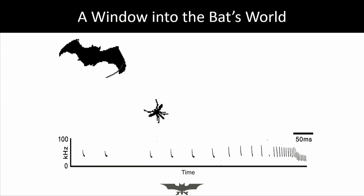Bats emit sound, echoes are received, and the brain processes these echoes to extract many types of information. When we look at a sequence of calls on a spectrogram — frequency over time — I can say quite a bit about the behavior of the animal. You can notice how the signals change: intervals become shorter, bandwidth increases, duration of each signal decreases. In this case, the bat is attacking prey.